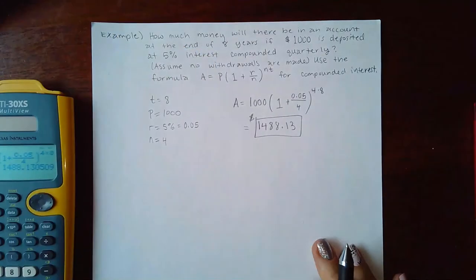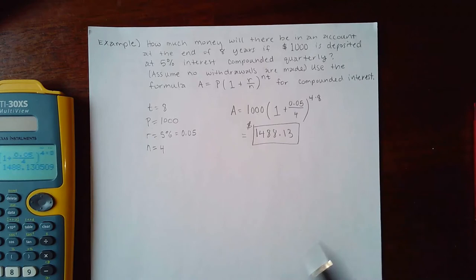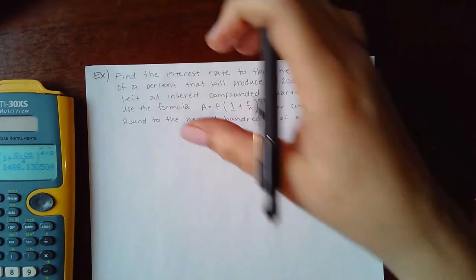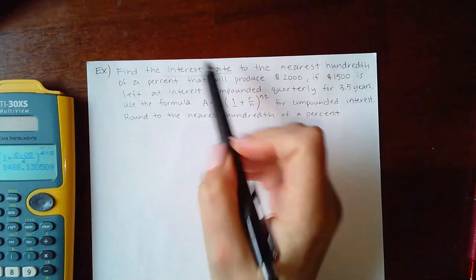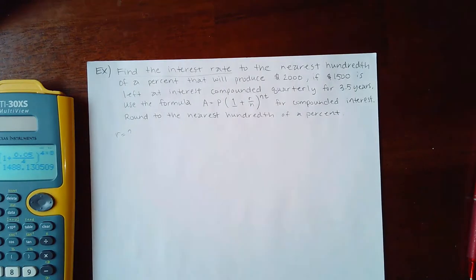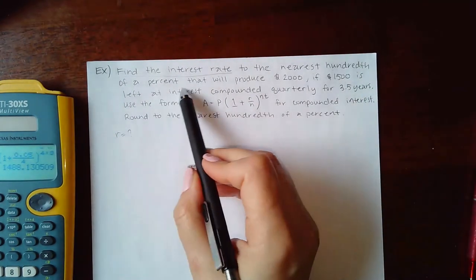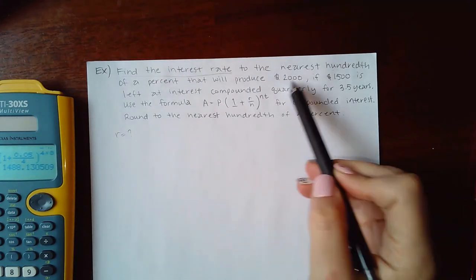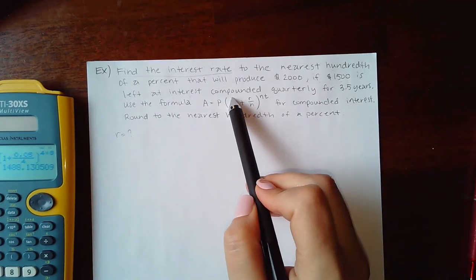Entering that into the calculator gives $1,488.13. That's a problem we've done before — they're just bringing it back to make sure you can still do it. Now things get different: this next problem asks us to find the interest rate r, rounded to the nearest hundredth of a percent.